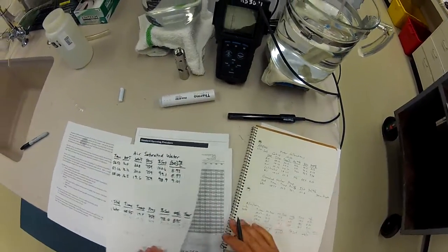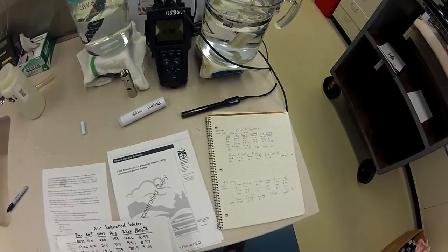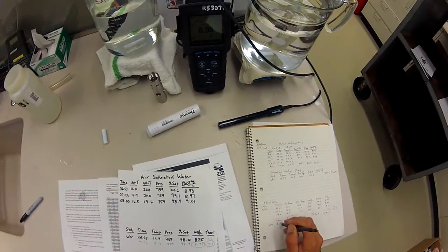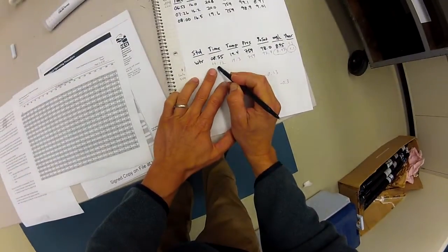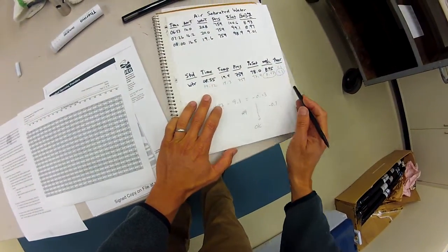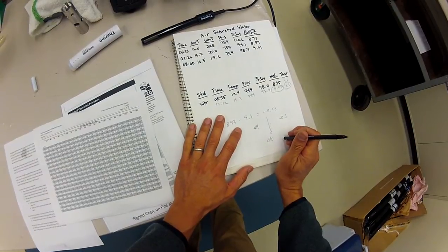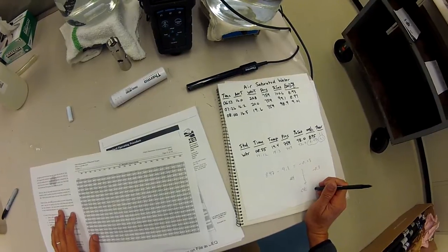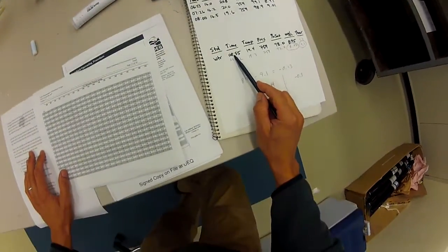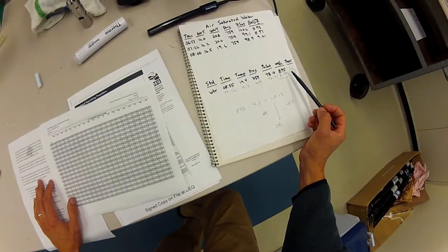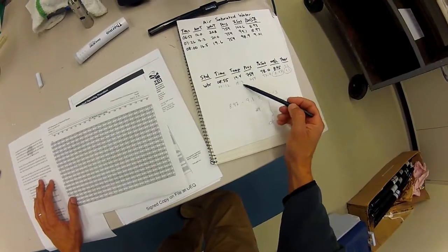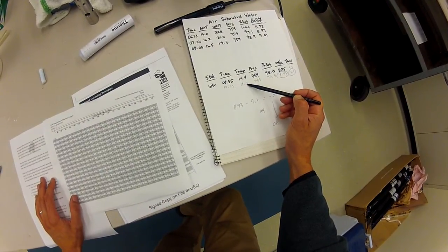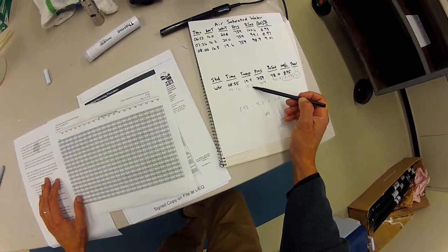On our field sheet, we would want to record the meter number, the time that we did our accuracy check, all of this information. And we would circle yes for the fact that we passed our verification criteria. We've recorded two times here to document that we have a reasonably stable standard. They're within a tenth for both milligrams per liter and temperature. That's what we want to have documented so that we know that our standard is reasonably stable.